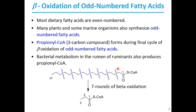After round 6, the product is a 5-carbon acyl-CoA. This 5-membered acyl-CoA can undergo one more round of beta oxidation, and the products are propionyl-CoA and acetyl-CoA. So 7 acetyl-CoA molecules are being produced, and 1 propionyl-CoA is produced as a result of beta oxidation of an odd-numbered fatty acid.